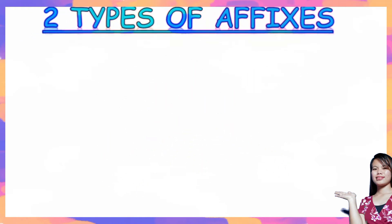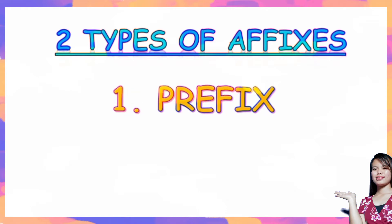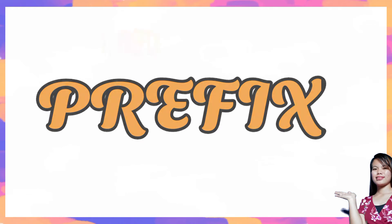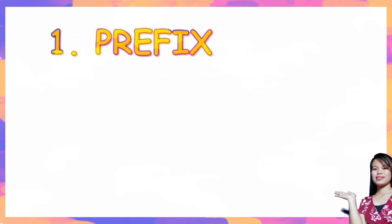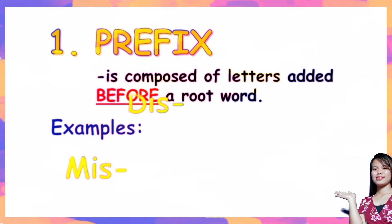There are two types of affixes. The first one is the prefix, and the second one is the suffix. When we say prefix, it is composed of letters added before a root word. Examples of prefixes are Miss, Dis, and Im.